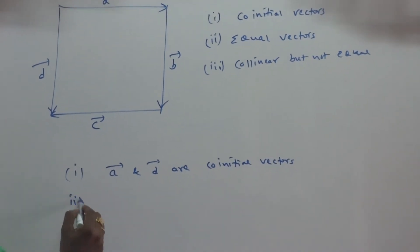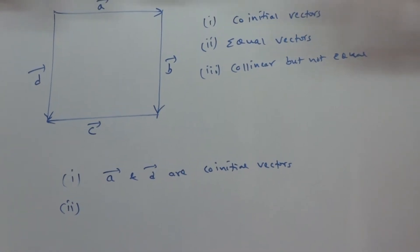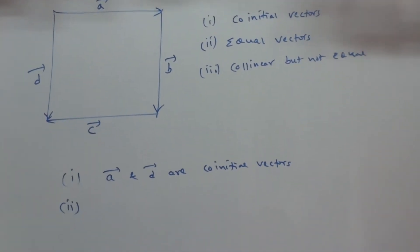Second question, equal vectors. What is meant by equal vectors? Equal vectors means direction as well as magnitude, both are same.